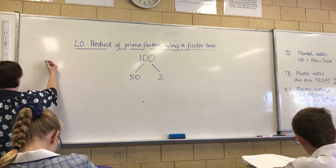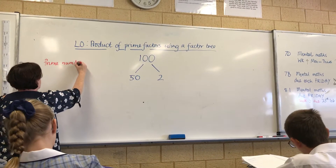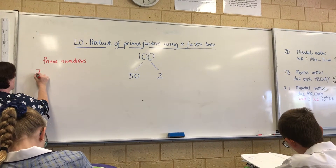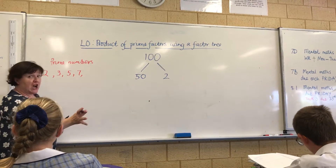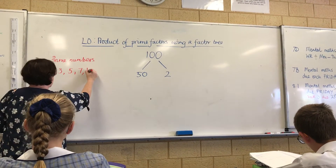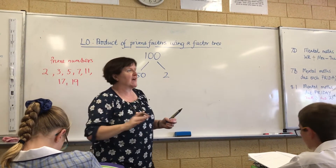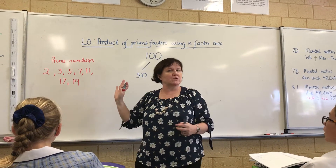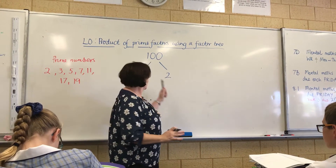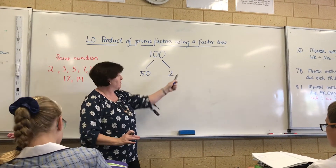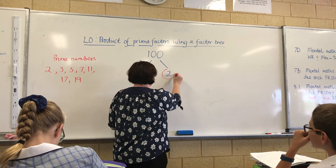I'm also going to list the prime numbers here so we can remember what they are. The prime numbers are 2, 3, 5, 7 — not 9 obviously because it divides by 3 — 11, 17, and 19. It's very rare that you'll have to use one bigger than that, so we won't worry about anything bigger than 19 at the moment. When you get to the end of a branch and it is a prime number, you use a different colour and you circle it like that.